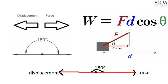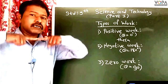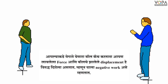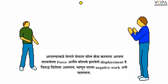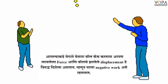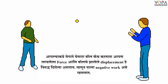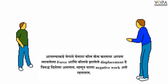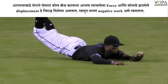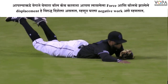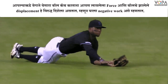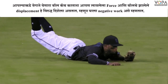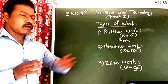In this case, the angle between the force and displacement is 180 degrees, that is, theta is equal to 180 degrees. Another example: if your friend throws a ball towards you and you try to catch it, then the force applied by you and the direction of displacement of the ball are opposite to each other. So the work done is negative work.